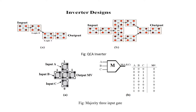Here we can see some of the designs using QCA. We can implement a simple QCA logic inverter. Here we are giving logic 0 as input. Due to the Coulombic effect, there is no electron present at this position because the 2 electrons are repelled. This electron will be placed here, and the opposite electron will be placed accordingly. The process continues, and we can see that given logic 0 input, we get logic 1 output, which acts as an inverter.